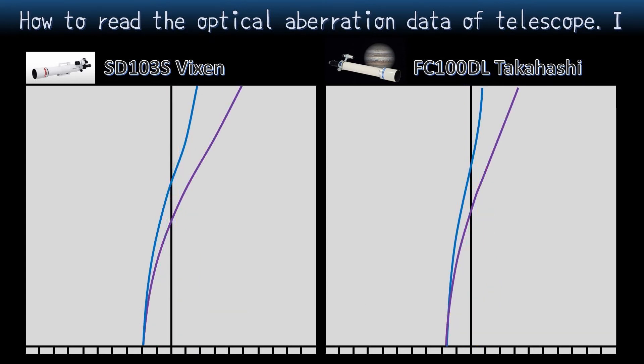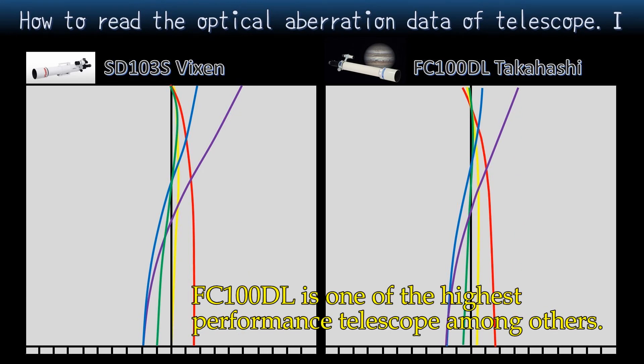Next, let's focus on the curve of blue and purple. Curves of FC-100DL is closer to zero, isn't it? This means that FC-100DL has less blue halo. FC-100DL is one of the highest performance telescopes among others.